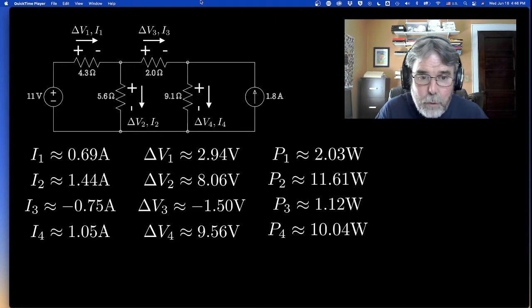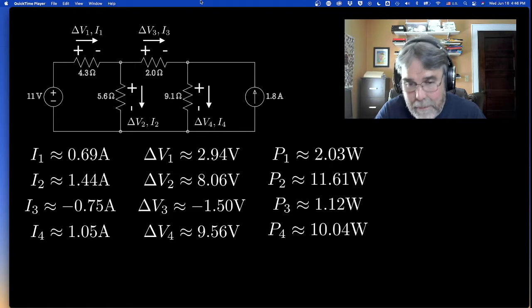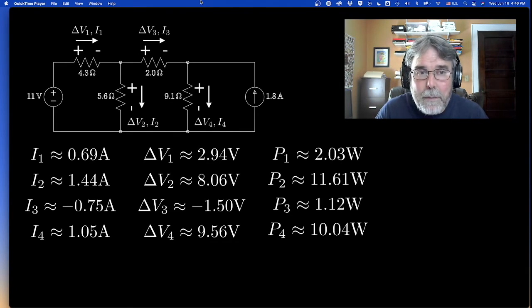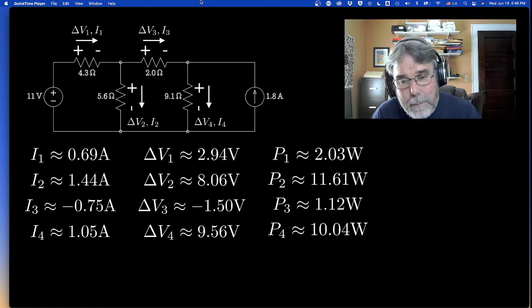Notice that because the voltage and the current in the 2 ohm resistor are both negative, the power is still positive, which means that the thing still dissipates energy. Current is still flowing from high potential to low potential. It just turns out it's in the opposite direction that we initially guessed. But it's still a passive component. It still absorbs energy.